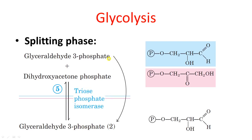Because DHAP is converted into glyceraldehyde-3-phosphate, two molecules of glyceraldehyde-3-phosphate are ultimately formed from fructose-1,6-bisphosphate: the original one and the one generated from DHAP via triosephosphate isomerase. From this point onward, the pathway proceeds with two molecules.